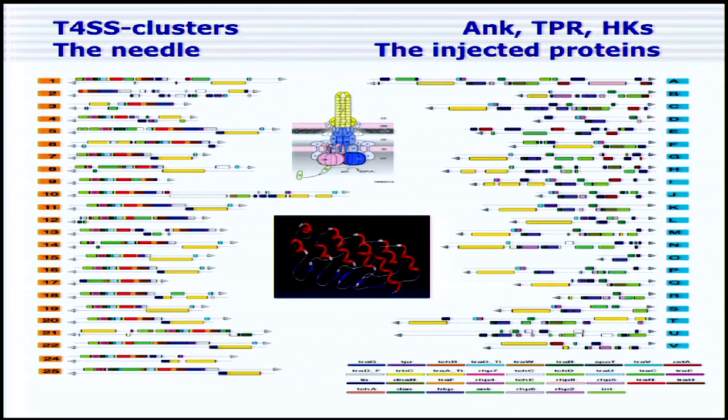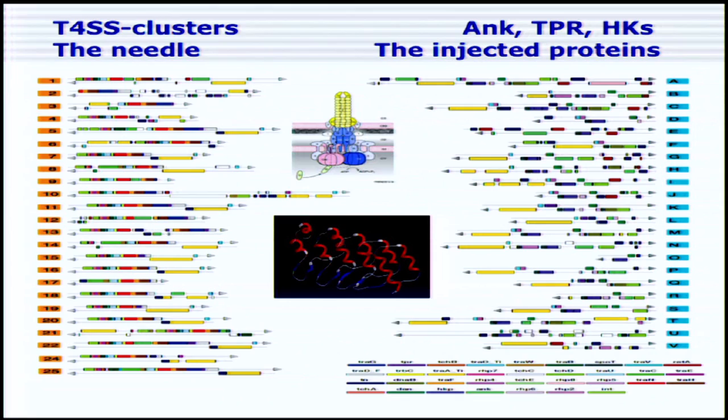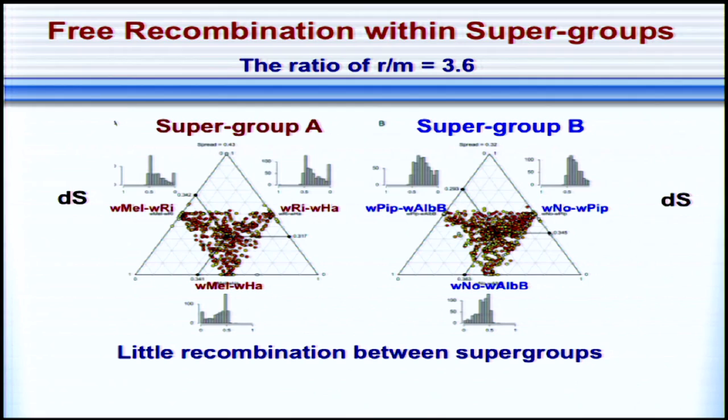There was no recombination — or so I thought. And then we started to sequence Wolbachia, which is also related to Rickettsia, and here we found surprisingly high recombination frequencies. Wolbachia are maternally inherited endosymbionts of insects such as Drosophila. We sequenced several of these genomes and showed that there is essentially free recombination between strains within supergroups, even if they infect different host species, but very little recombination between strains of different supergroups, even if they infect the very same host species.